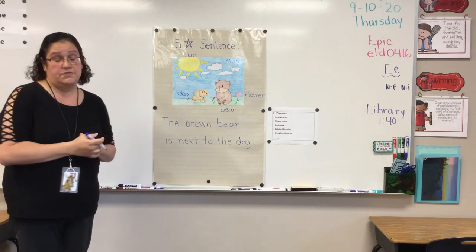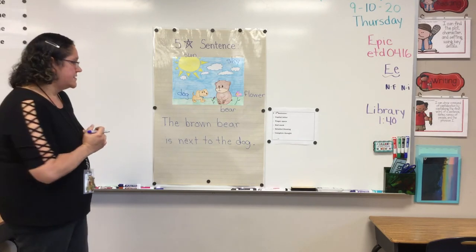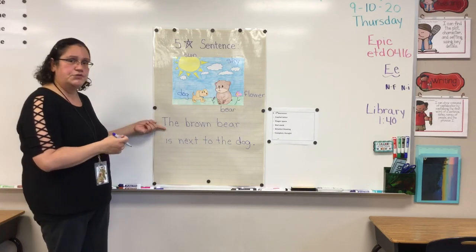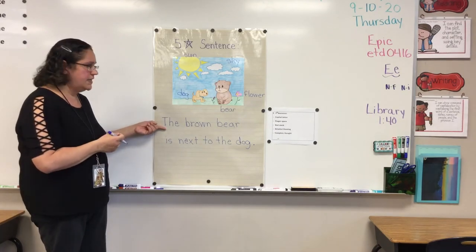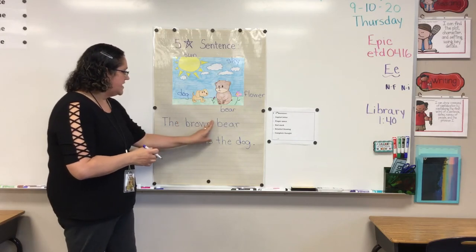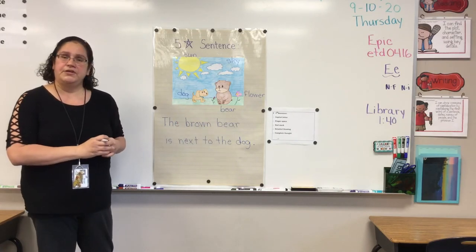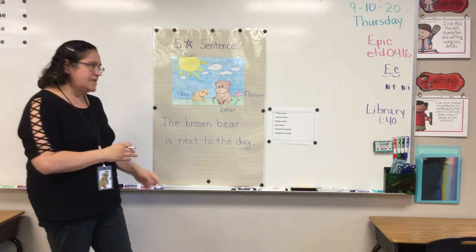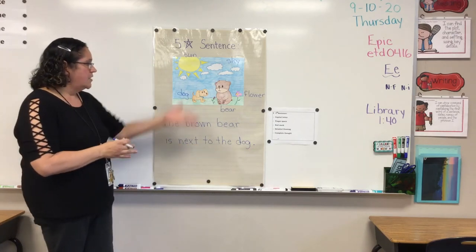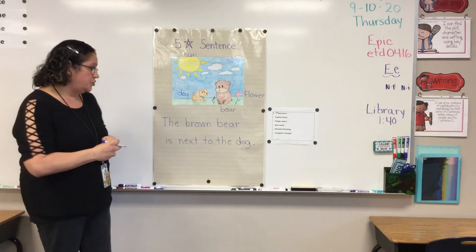Now I'm going to check to make sure that I have a five-star sentence. Do I have a capital letter? Yes, I do at the beginning. Do I have finger spacing? Yes, I do. Did I put a period at the end of my sentence? Yes, I did. Do I have a detailed drawing? Yes, I do.